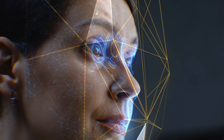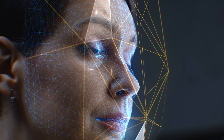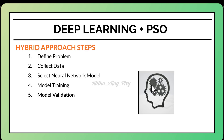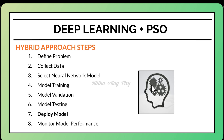For example, if you trained a model for face recognition on a specific dataset and new images are given, during model testing you assess whether the model gives accurate results on new data. After that, deploy the model by integrating the trained model into your application or system where it can make predictions or decisions in real time.